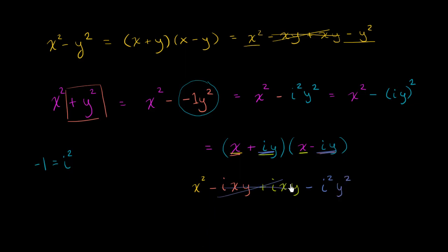Now, these middle two terms cancel out. i squared is negative 1. And so we have x squared minus negative 1 y squared. So this is subtracting a negative, the same thing as adding a positive. And so this simplifies to x squared plus y squared.